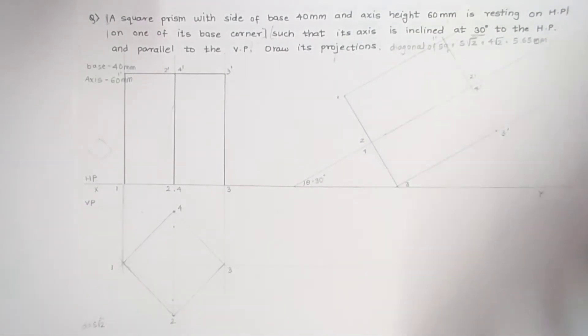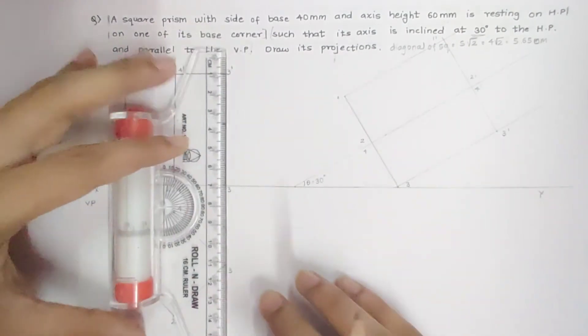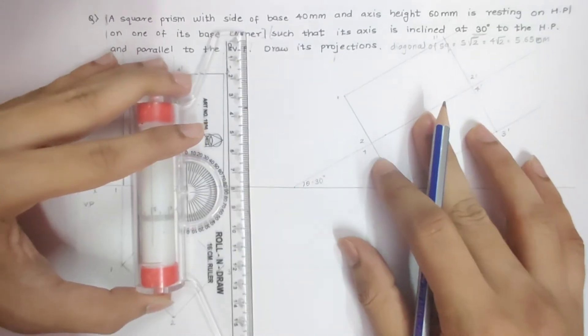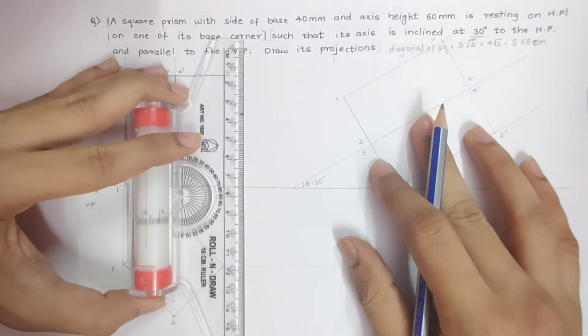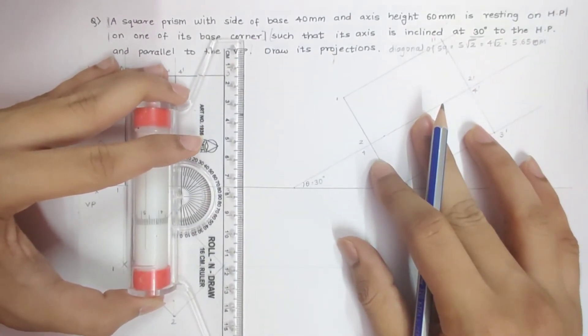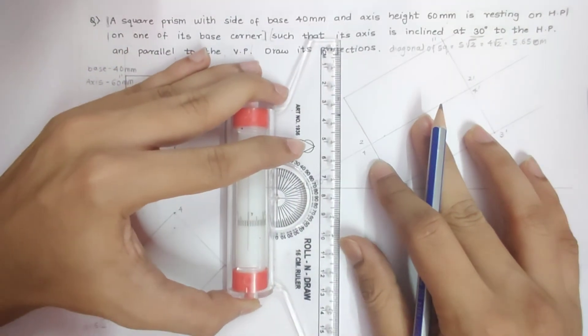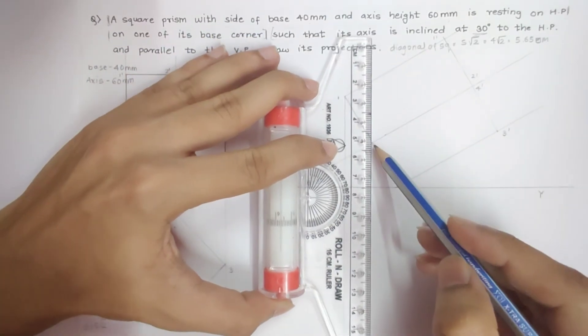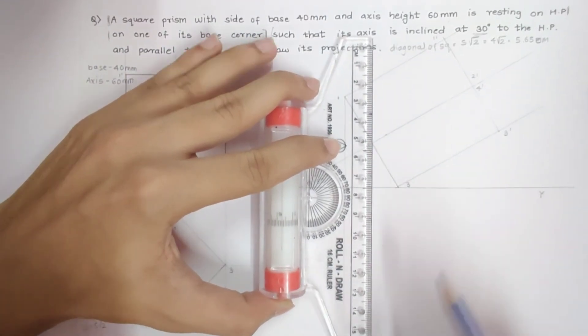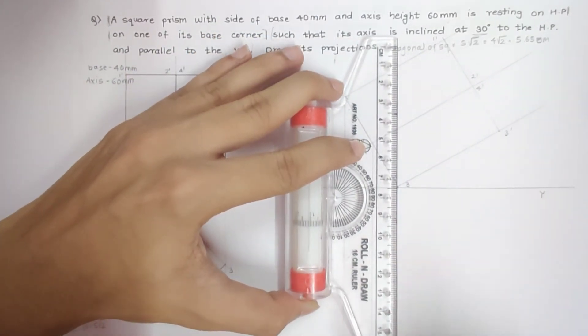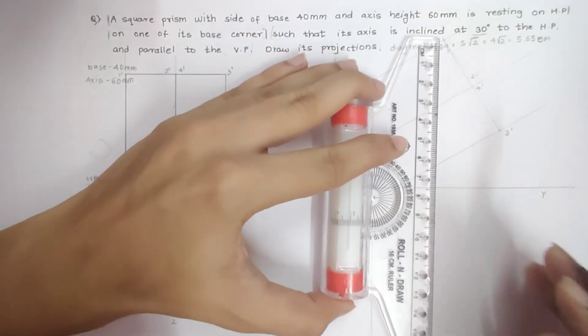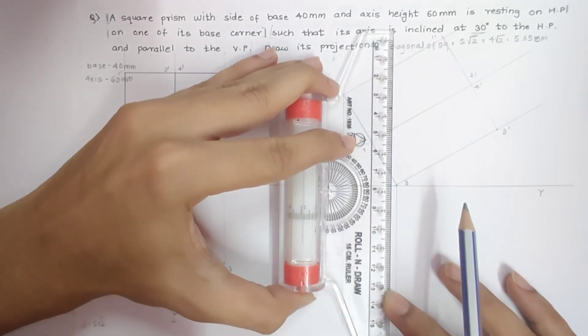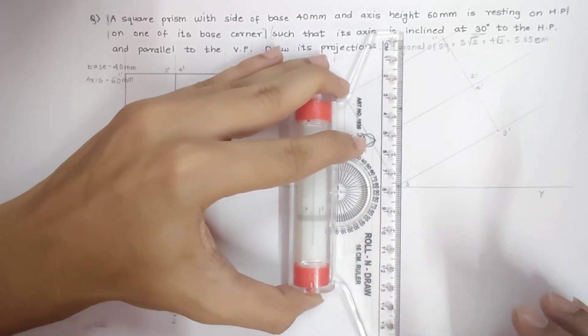I will take again the projection down downwards to the HP. Taking the projection - make sure your page won't get disturbed. I will draw the projection. Don't do any kind of mistake while taking the projection.